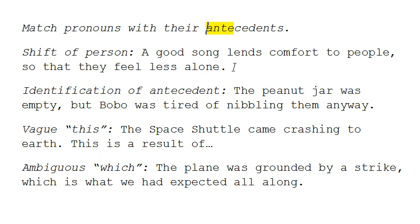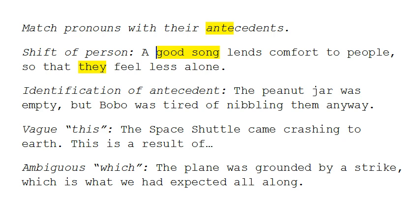Here's an example of a sentence where the pronoun is correct, but it's still difficult to figure out what the antecedent is. Here's the pronoun 'they.' A good song — that could be the antecedent, that's the subject — lends comfort to people. But here's another noun, and that's another option for the antecedent.